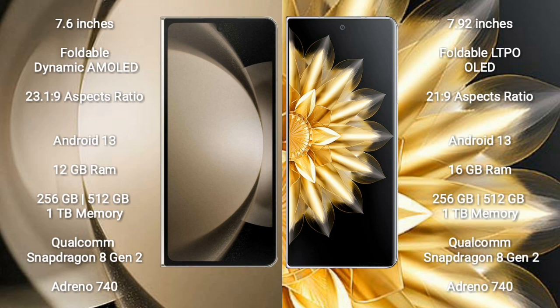Samsung Galaxy Z Fold 5 comes with 12GB RAM and 256GB or 512GB or 1TB internal storage, Qualcomm Snapdragon 8 Gen 2 processor, and GPU Adreno 740. Honor Magic V2 comes with 16GB RAM and 256GB or 512GB or 1TB internal storage, also featuring a Qualcomm Snapdragon 8 Gen 2 processor and GPU Adreno 740.